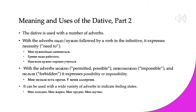We can also use the dative with a wide variety of adverbs to indicate feeling states. For example, мне холодно — I'm cold. We use the dative мне, 'to me,' and then the adverb холодно. In Russian you say 'to me it is cold.' If you say я холодный, that means 'I am a cold person,' like cold-hearted or cold-tempered. But мне холодно means 'I feel cold.'